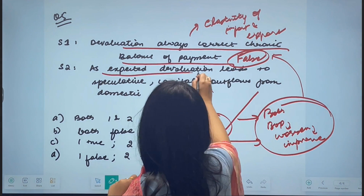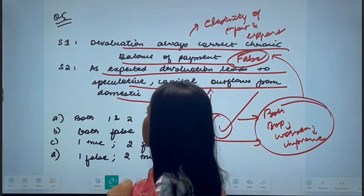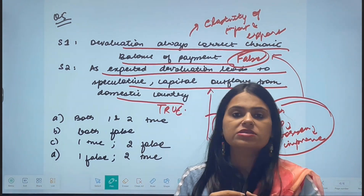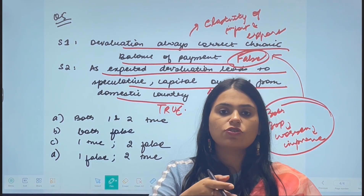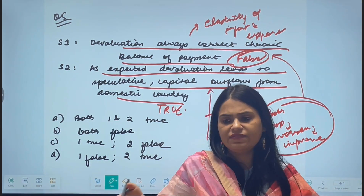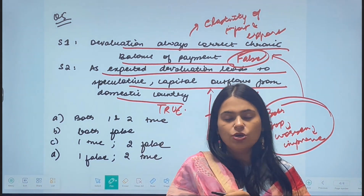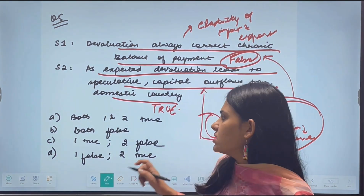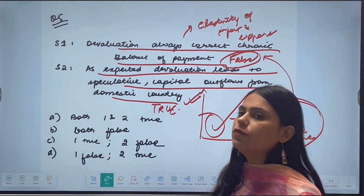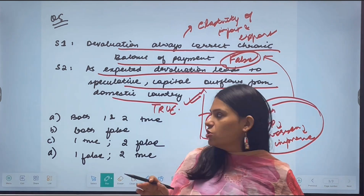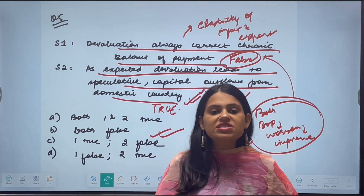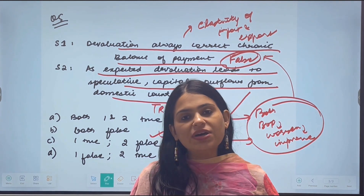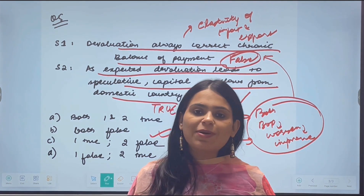The second statement says devaluation leads to speculative capital outflow from the domestic country. This is a true statement. If the currency is being devalued, investors do not want to invest in that country. For example, if the rupee's value is falling, investors will pull their capital out of India and invest elsewhere. So statement one is false and statement two is true. These are the kinds of macroeconomics questions you can expect in CUET. Keep practicing and see you in the next session.